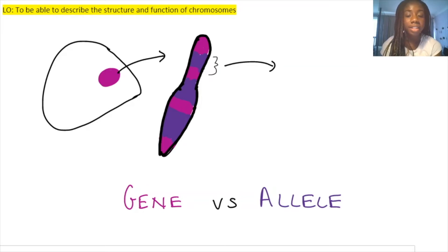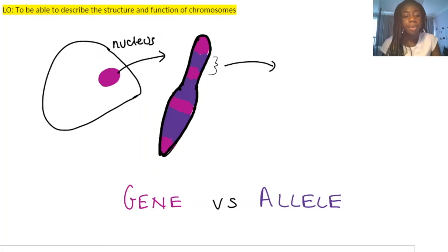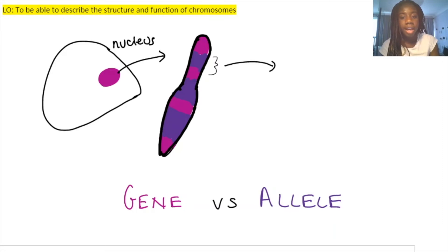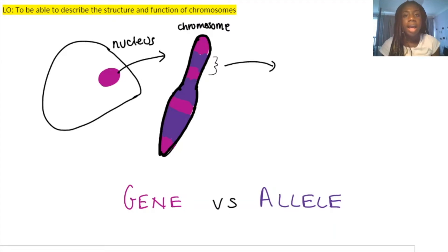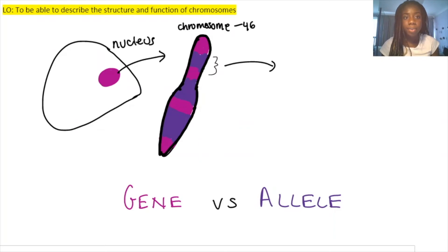In this diagram we have a schematic representation of the difference between the nucleus, the chromosome and a gene. Starting on the left, we have a cell with the nucleus — the purple section — which is where all the genetic information is stored. That genetic information is packaged into smaller elements called chromosomes, shown as the pink and purple structure. In normal body cells we have 46 chromosomes — the diploid number. A section of DNA on a chromosome, such as the highlighted purple section, is called a gene.